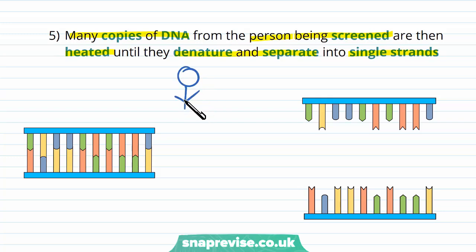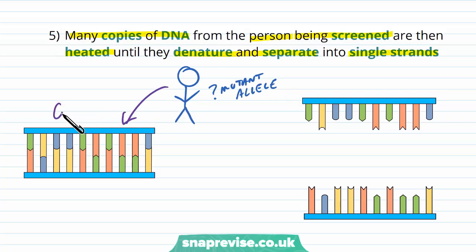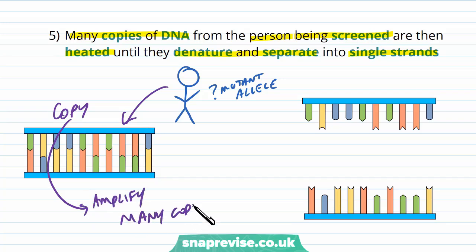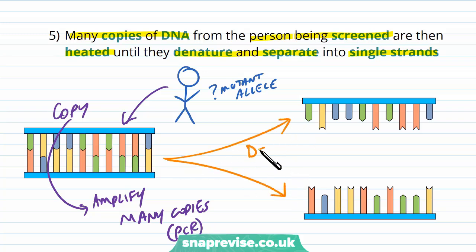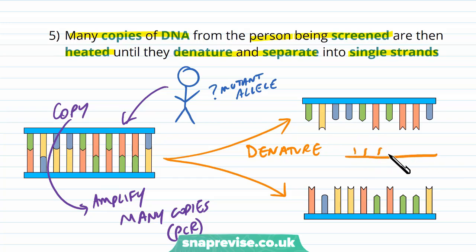We take a copy of the individual's genome, amplify it using PCR, and heat the DNA copies so they denature into single strands. This is essential because any probes used to detect the mutant allele need single strands to bind to. Remember, the probe is complementary to the mutant allele — when it comes across it, it will bind and show up with its fluorescence.